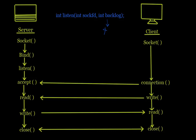For example, if we provide backlog as 4, then the first, second, third, and fourth connection requests would be accepted. When the fifth connection request arrives, the listen socket will say it cannot handle this many connections — we can only handle four at a time — and it rejects the fifth connection. That is what listen does.